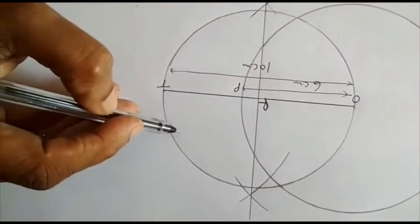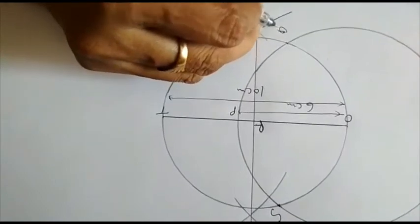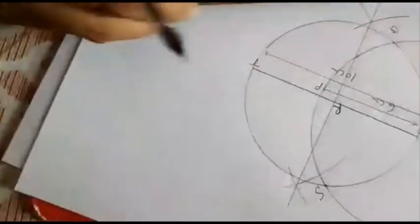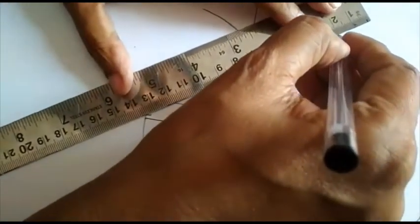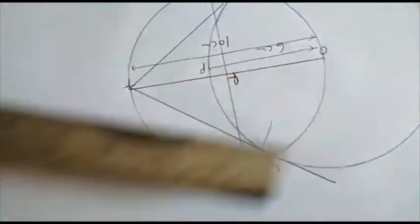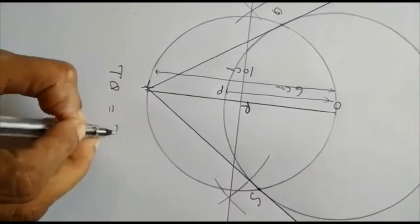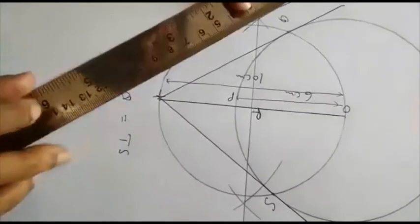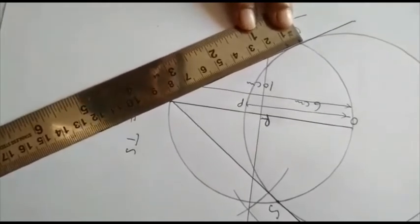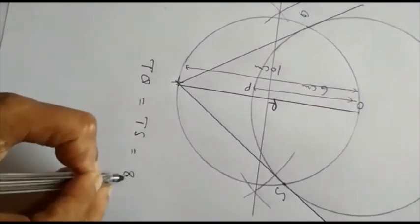This new circle intersects the previous circle at points S and Q. I will join TQ and then join TS. In this way, TQ and TS are the tangents from point T. If I measure their length, it is approximately 8.4 centimeters.